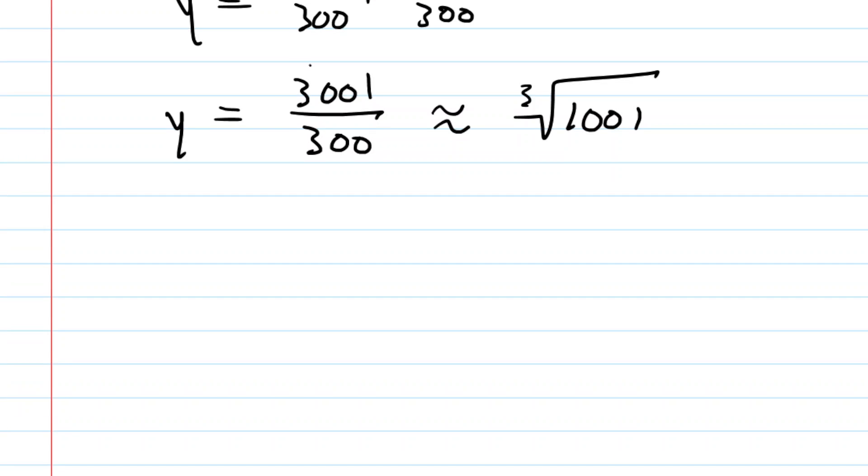Now interestingly, this is our answer here, but if you punch these into a calculator, 3,001 divided by 300 is 10.00 with a bunch of 3s repeating forever. And then the cube root of 1,001 is 10.0033 and then some 2s seem to follow. So they're very close, as you can see. Your final answer would be this fraction right here. That is the linear approximation to the cube root of 1,001.